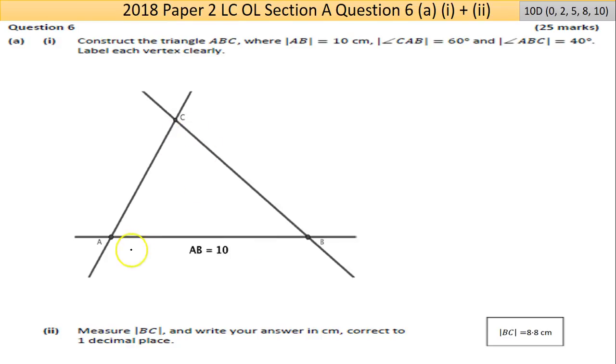So I'll go to the answer here. The diagram looks like that, taken from the marking scheme. You have a tolerance here but roughly the length of BC should come out to around 8.8. So 10 marks there for part A parts 1 and 2.